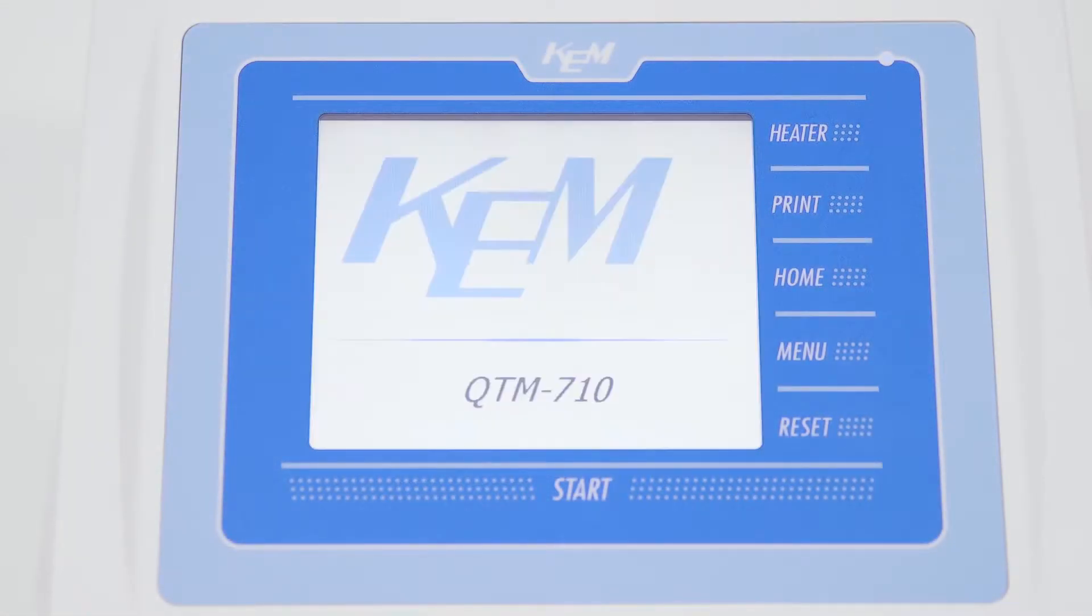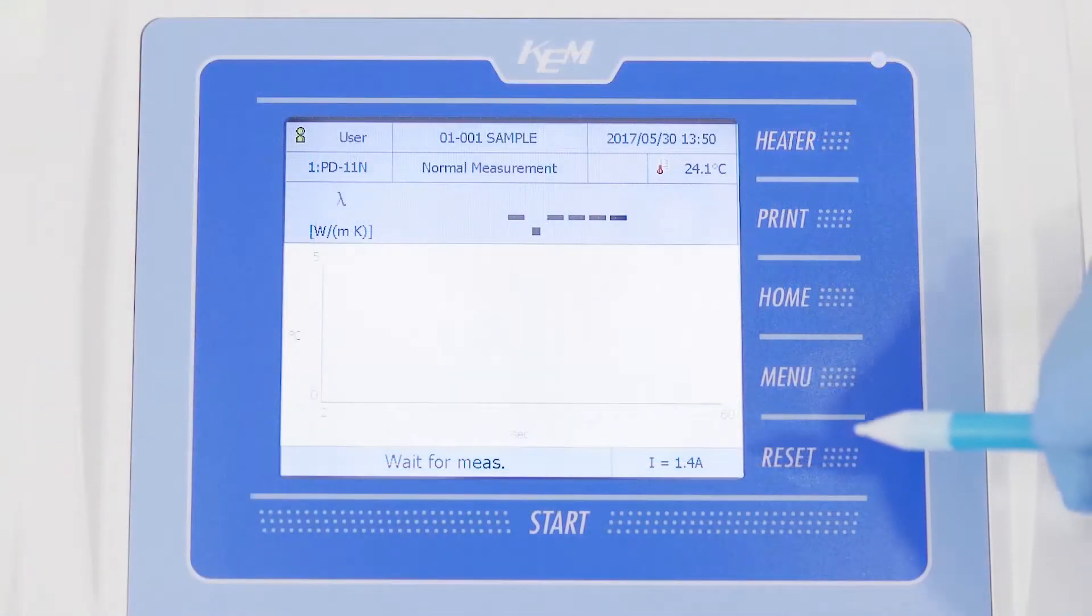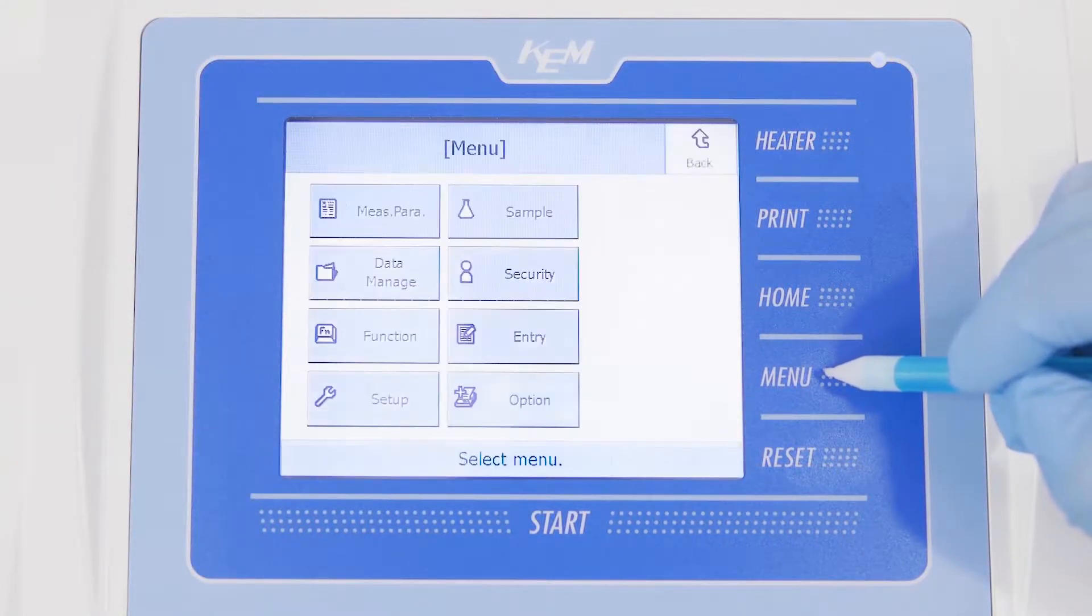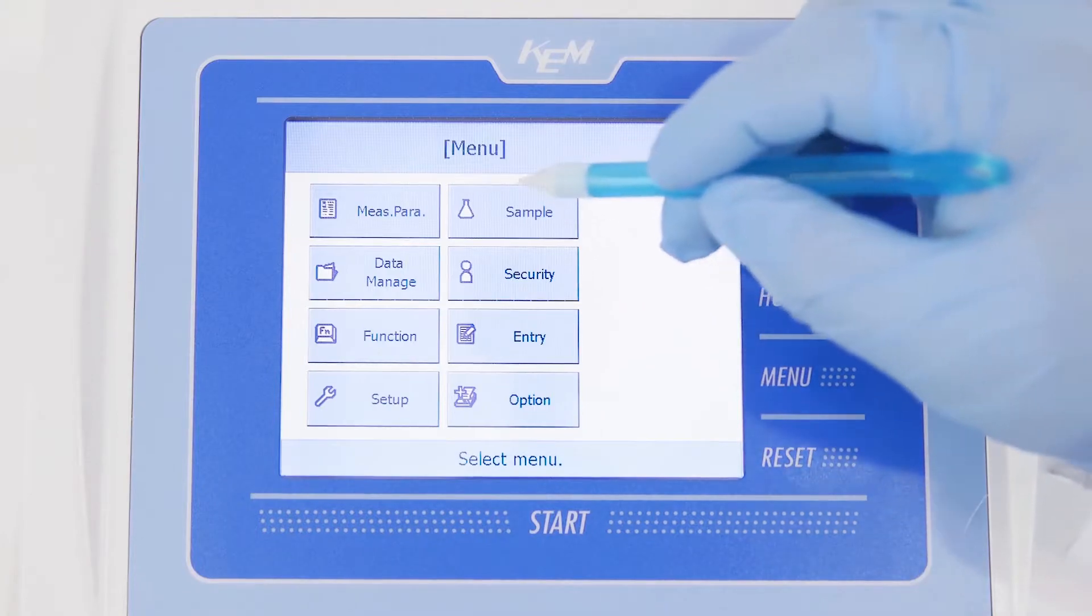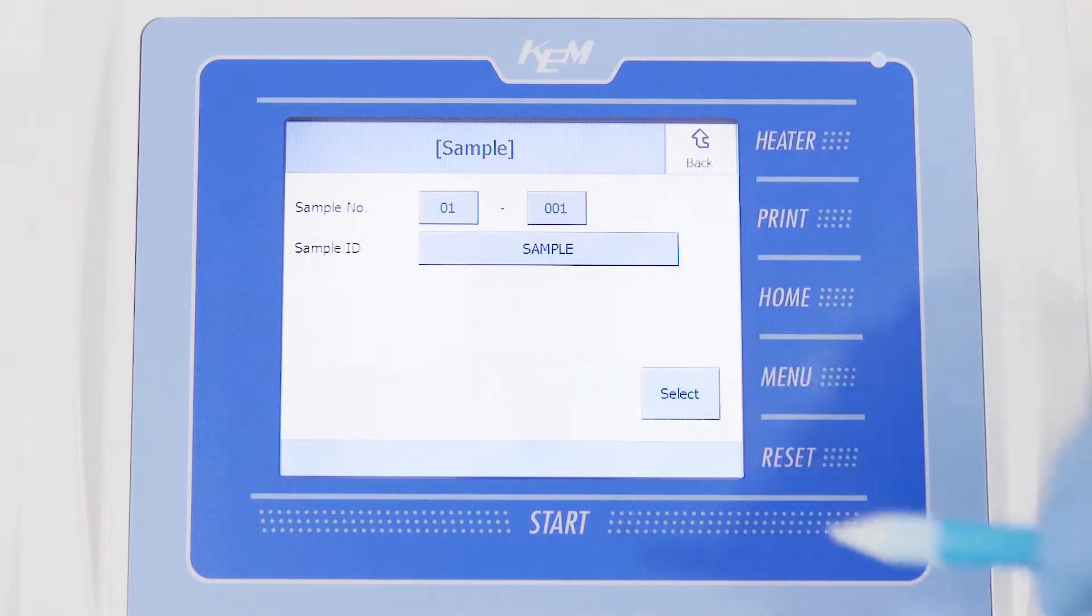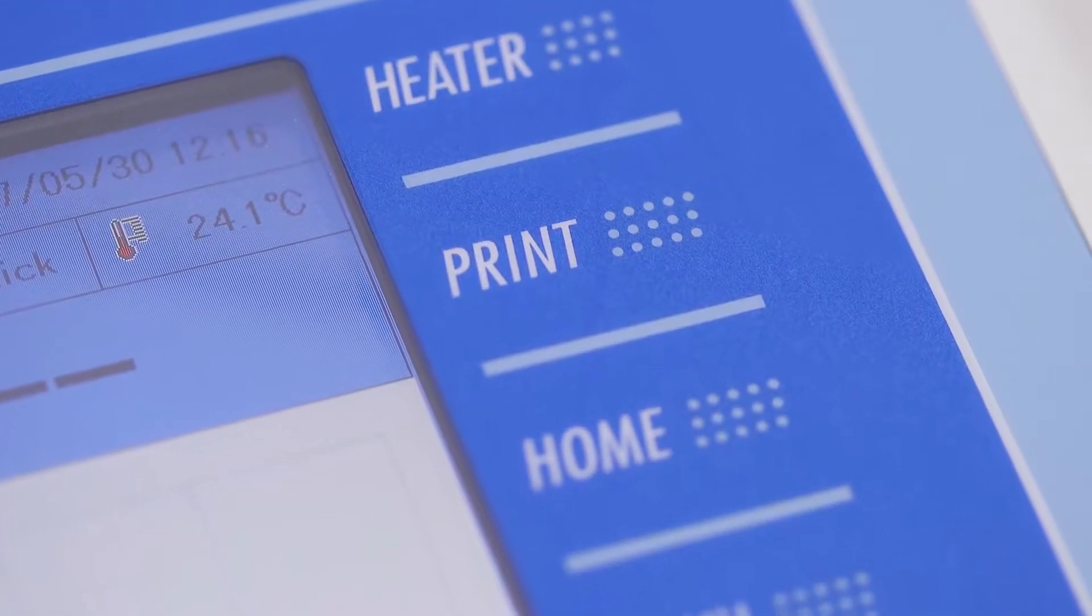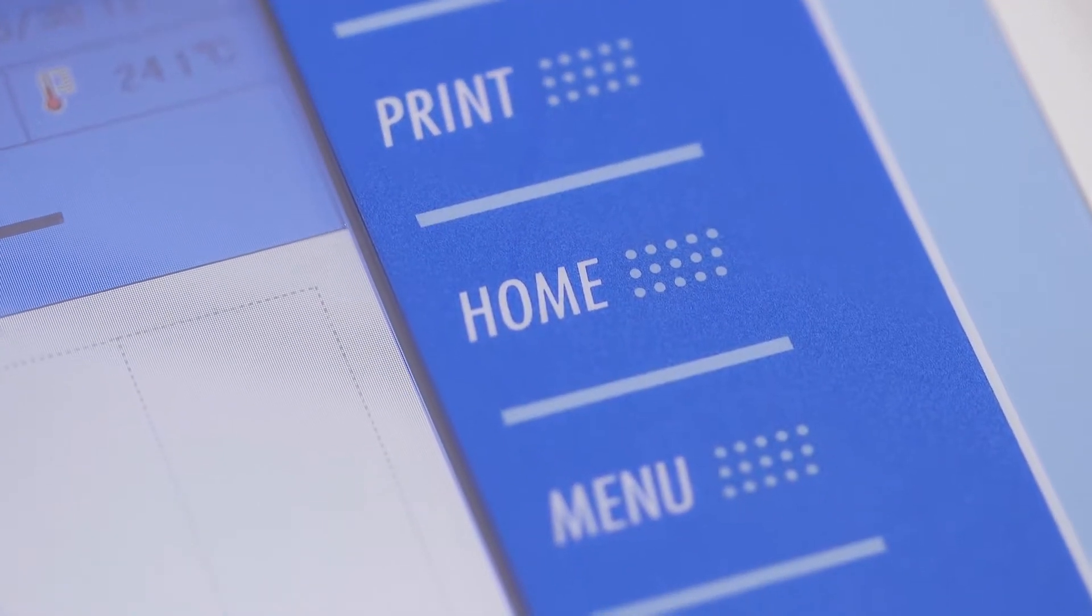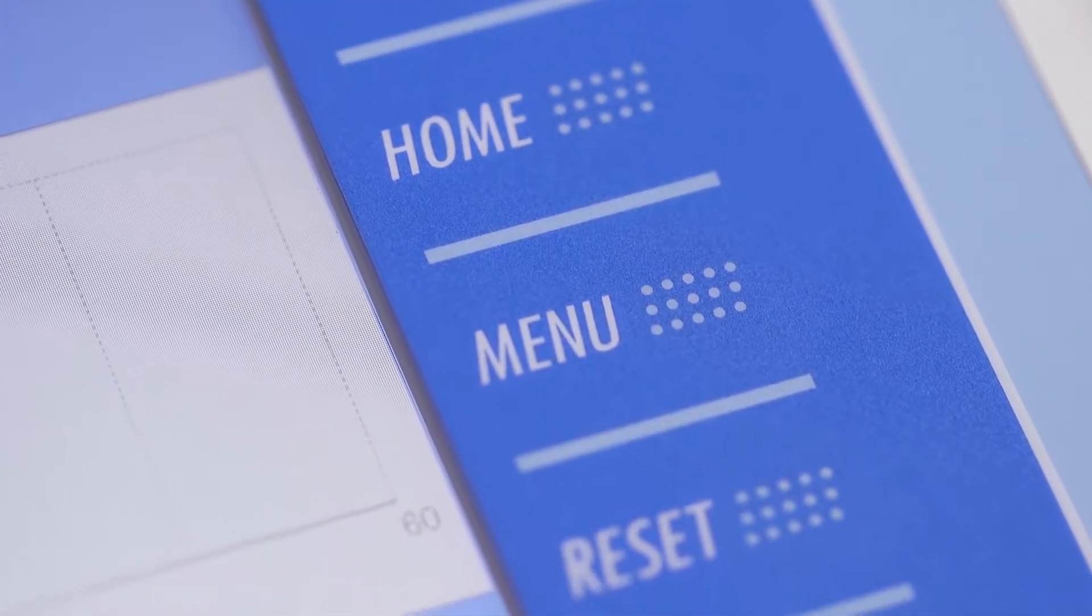The clear and easy to read 5.7 inch thin film transistor liquid crystal color touch panel display allows for easy intuitive operation. By simply pushing the measurement result category once, the recorded measurement values are displayed.